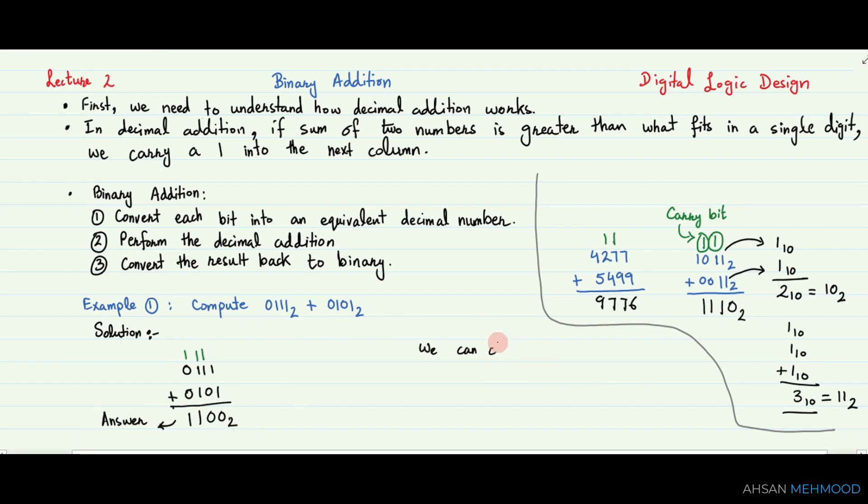We can check our work by repeating the computation in decimal. In decimal, 0111 base 2 is equal to 7 base 10, and 0101 base 2 is equal to 5 base 10. Therefore, the sum is 12 base 10, which is equal to 1100 base 2.